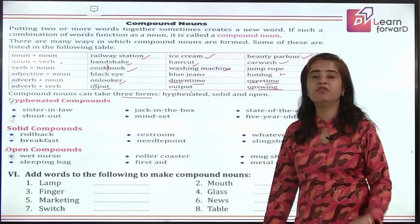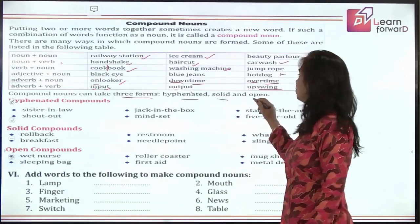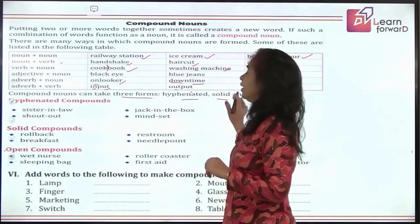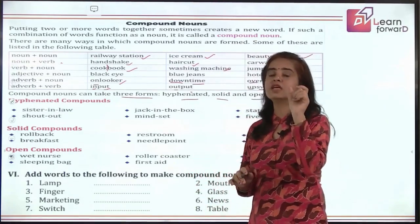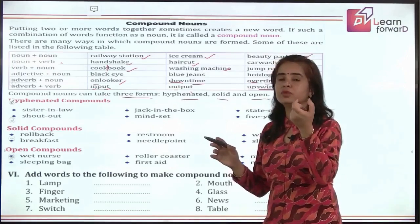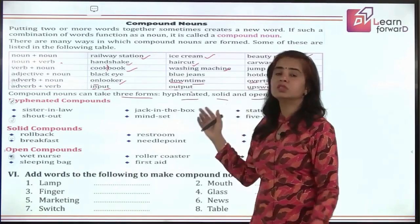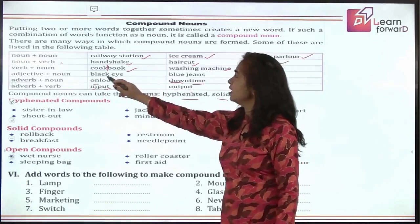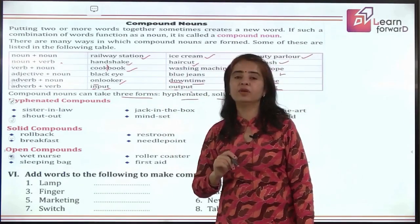Compound nouns can take three forms. They can be hyphenated — when you use a small dash (a hyphen) between the two words. The next form is solid compounds, where we put the two words together with no space — that's a closed form. The third form is open compounds, where the two words are written apart with a space between them, like 'black eye', 'blue jeans', 'jump rope', 'beauty parlor', 'ice cream', 'railway station'.